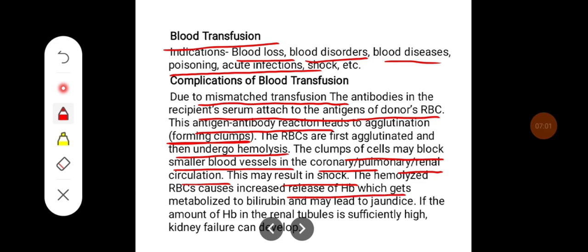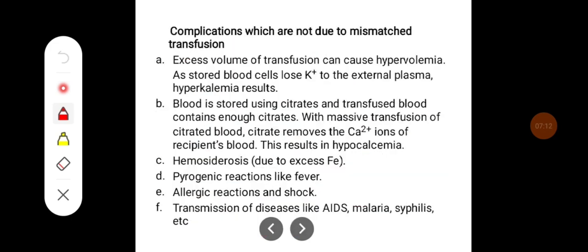The hemolyzed RBCs cause an increase in the rise of hemoglobin, which gets metabolized to bilirubin and may lead to jaundice. If the amount of hemoglobin in the renal tubules is sufficiently high, kidney failure can develop.